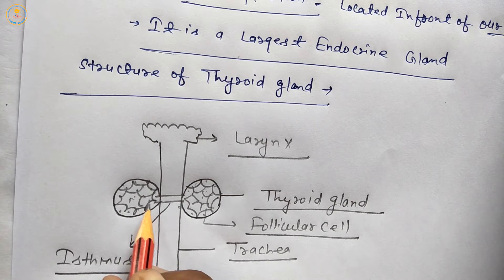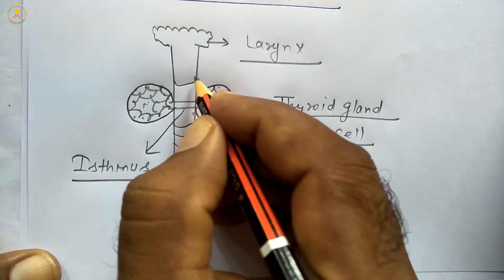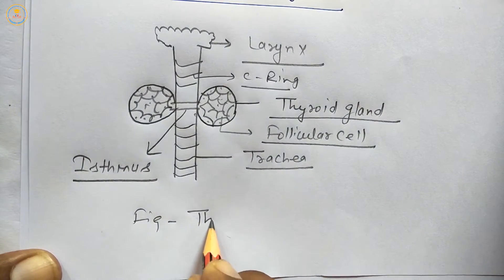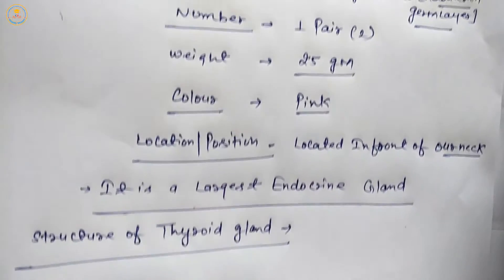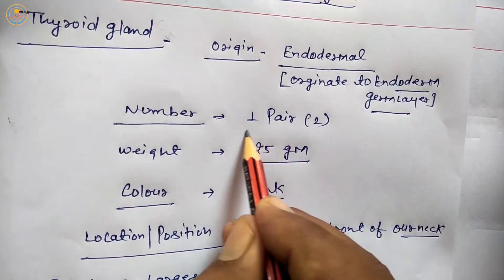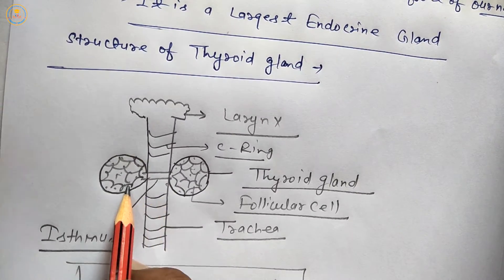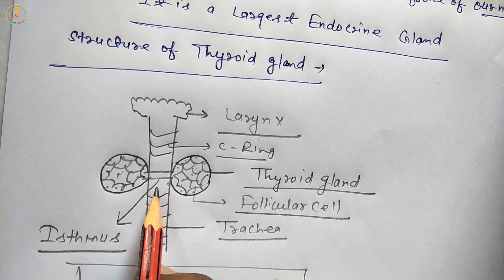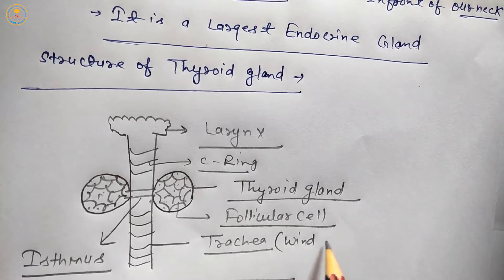The isthmus is a connective tissue that connects both lobes — the left and right thyroid lobes. The thyroid gland is located on the lateral and ventral part of the trachea, also called the windpipe. So to recap: one pair, endodermal origin, pink color, located in front of the neck on both sides.